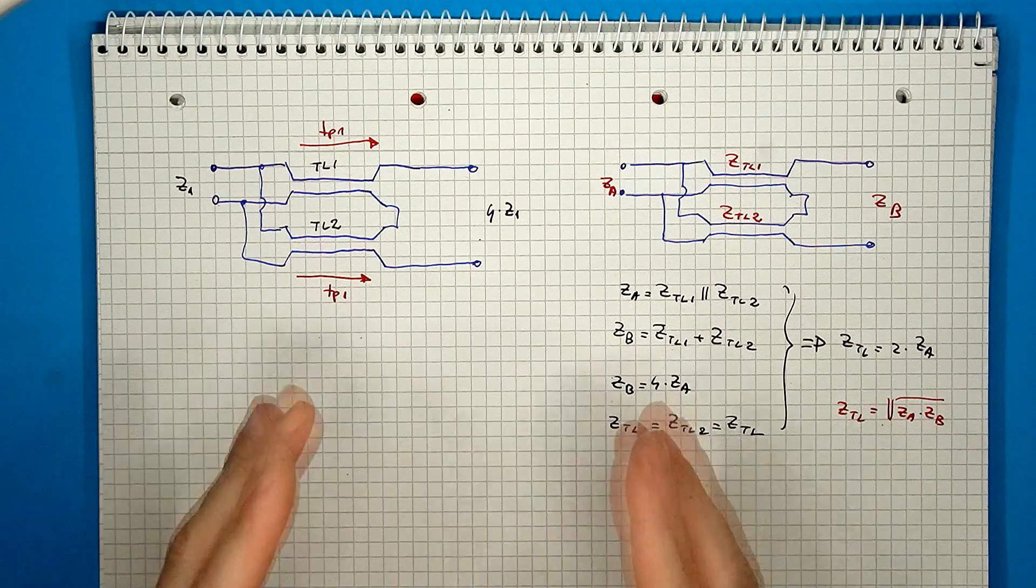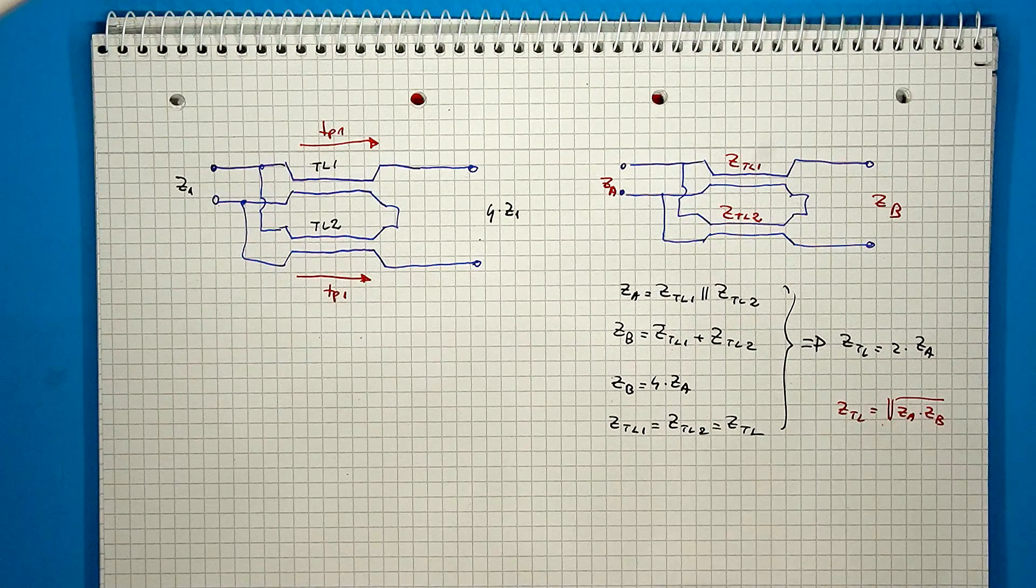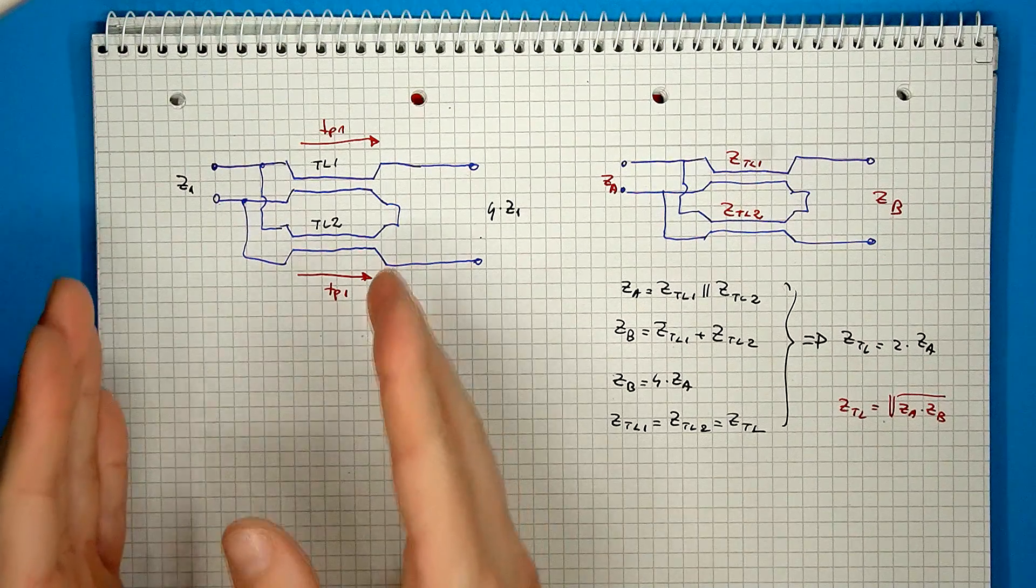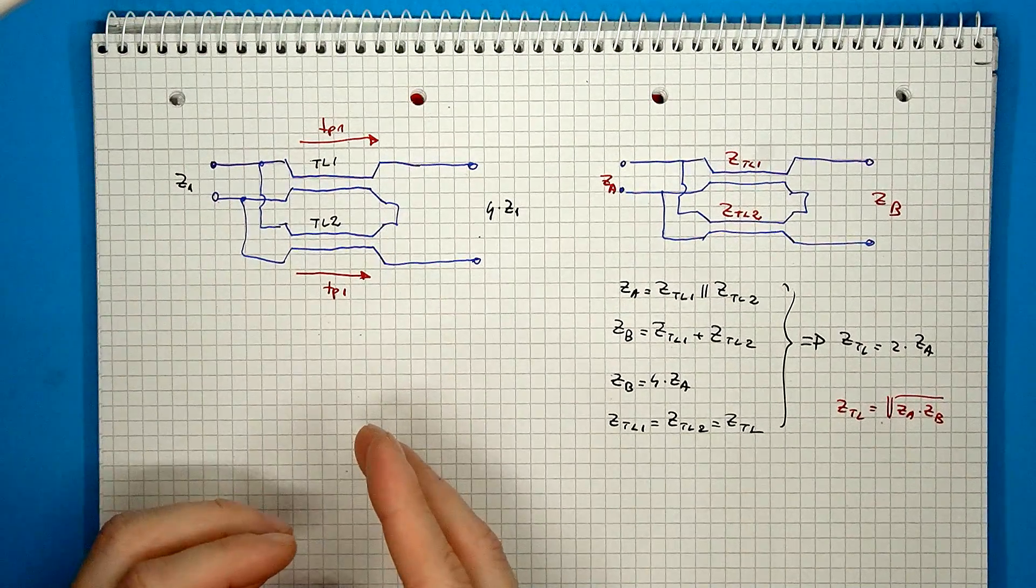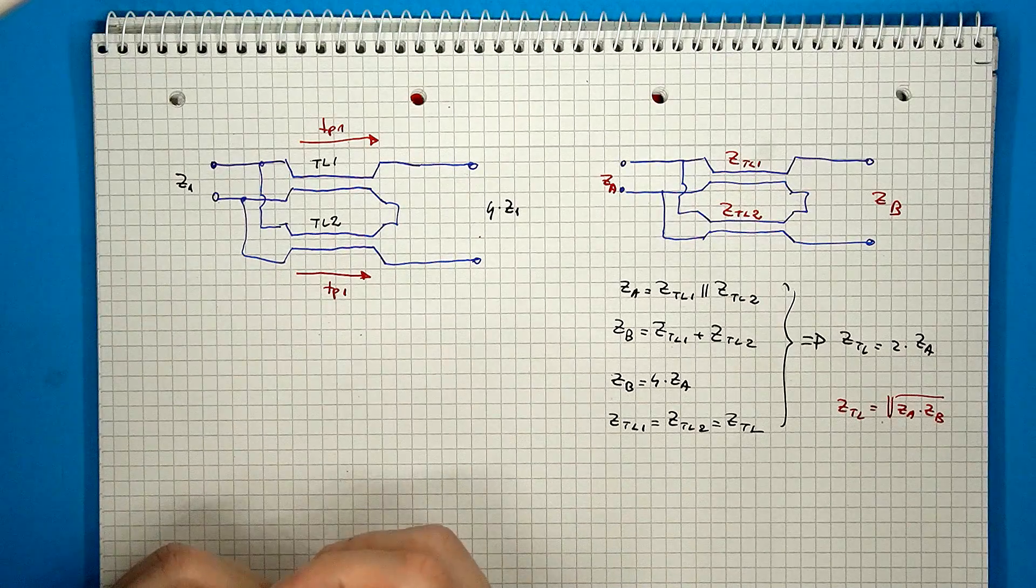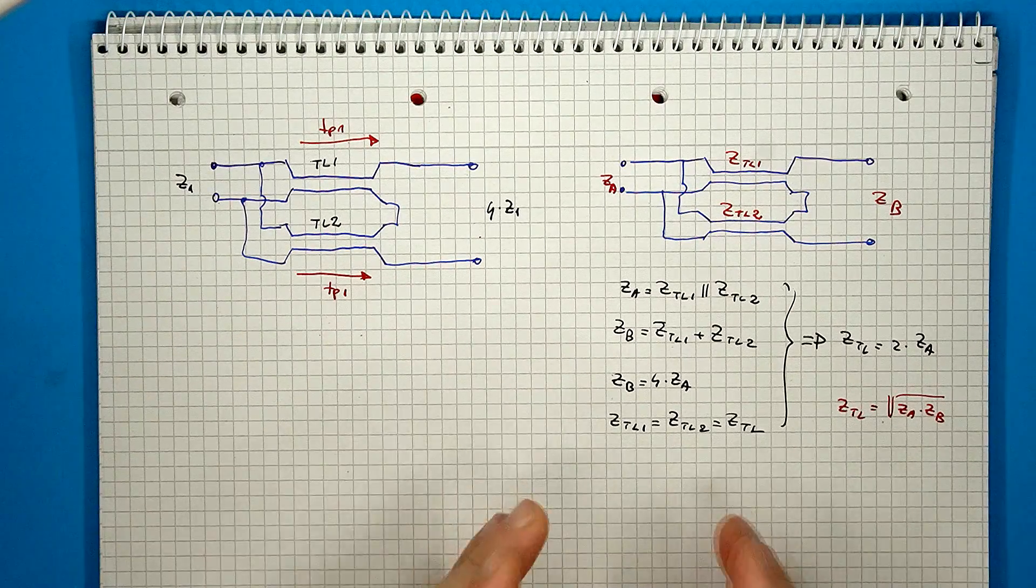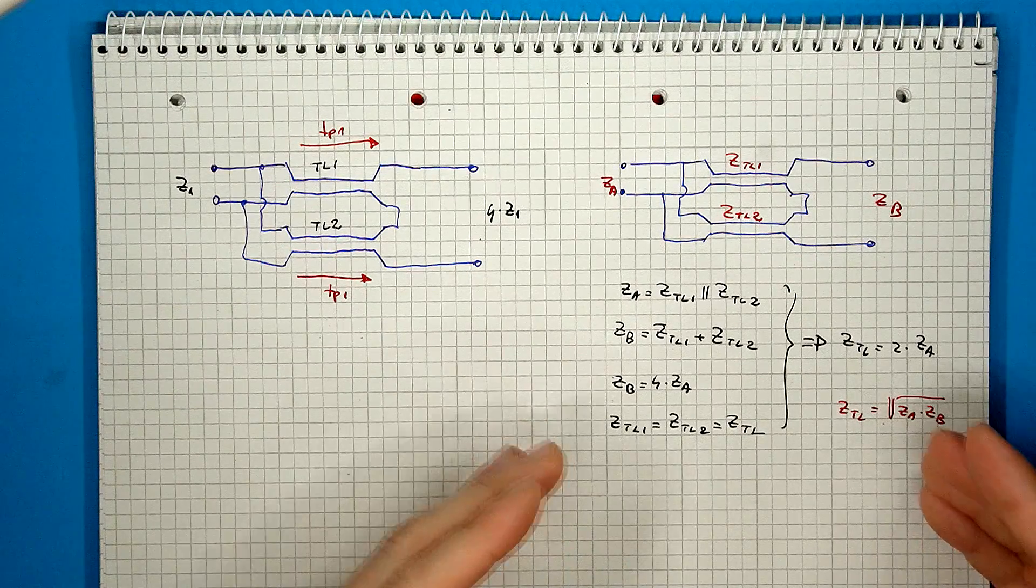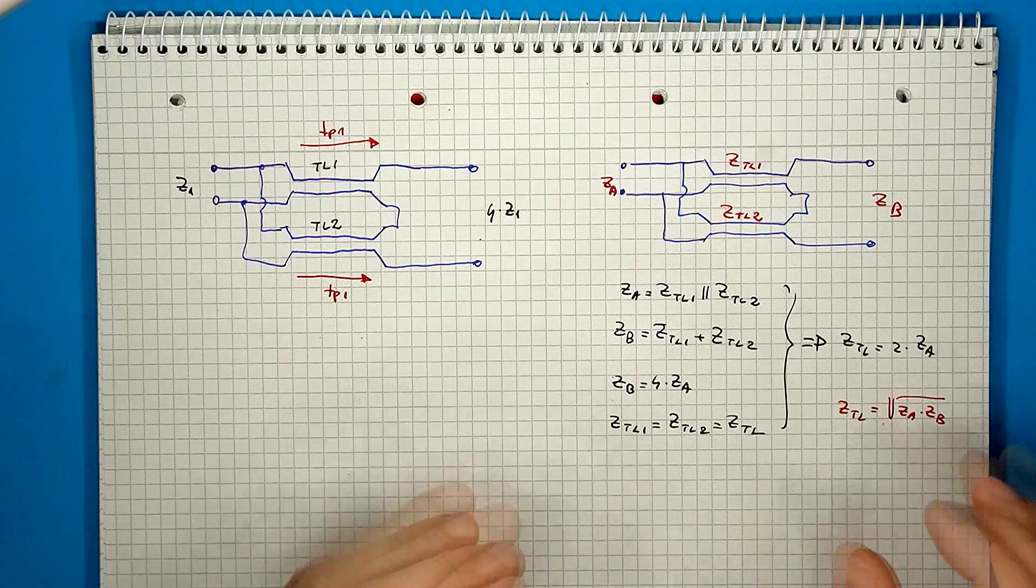So to get the best out of this type of transformer, especially at high frequency, we need to first off strictly control the propagation delay in the multiple sections, they all need to be the same, and we need to strictly control the characteristic impedance, which is determined based on the exact interfaced impedances.